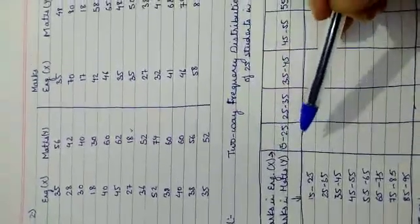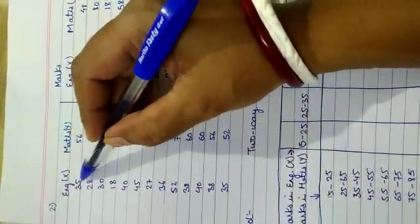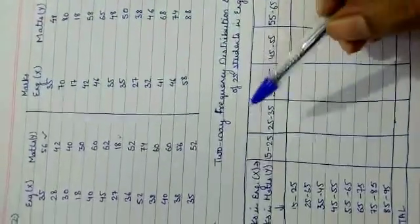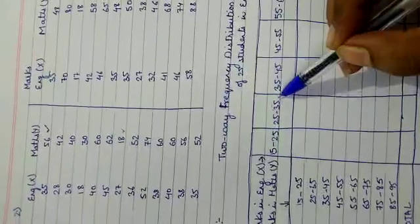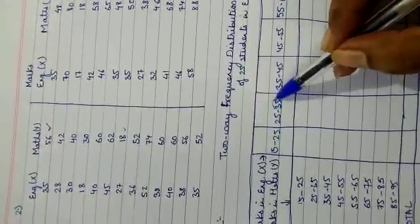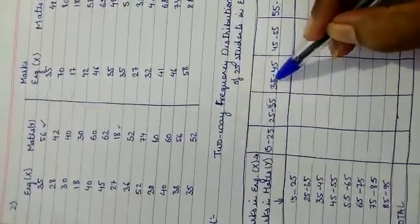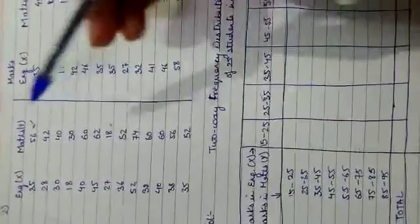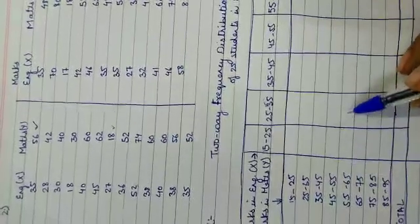Now, how are we going to put the tally marks? The first pair is X=35 and Y=56. For X, 35 falls in the 35–45 interval — we include 35 in this integral value. For Y, 56 falls in the 55–65 interval. So the first tally mark goes at the intersection of those two class intervals.